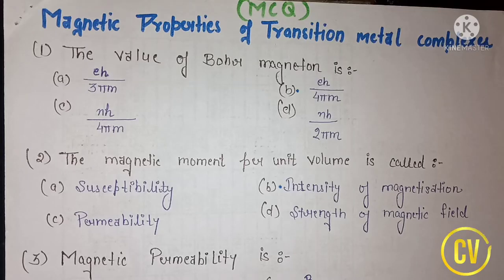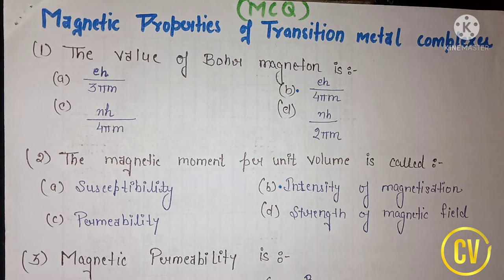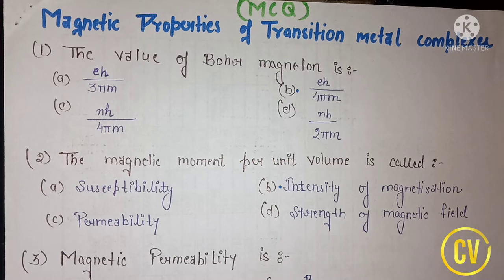Hello friends, welcome to the channel Chemistry with Vanshika. Today we are going to discuss another important topic of BSc 6th semester in organic chemistry, that is magnetic properties of transition metal complexes. On our channel, other topics for BSc 6th semester have multiple choice questions uploaded — go and practice them for your exams.